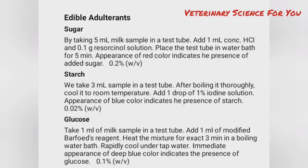Detection of starch — take 3 ml sample in a test tube, boil it thoroughly, and cool it to room temperature. Add one drop of 1% iodine solution. Appearance of blue color indicates the presence of starch.